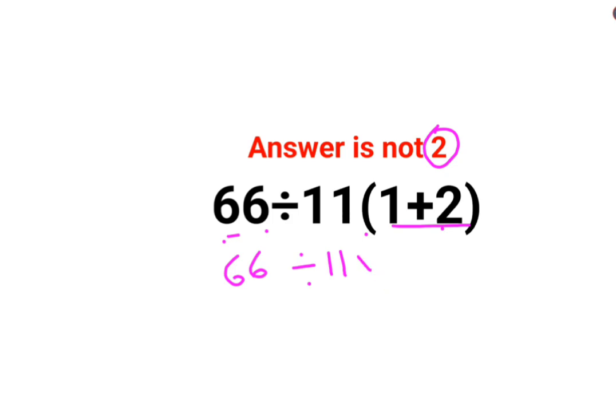So 1 plus 2 is basically 3, and since there is no sign between 11 and the bracket, the sign carried forward is multiplication.